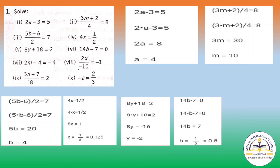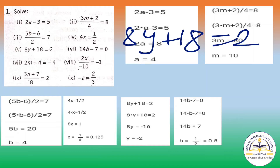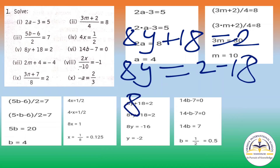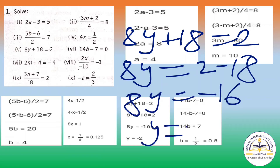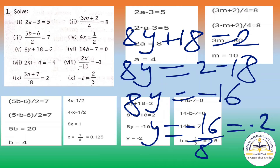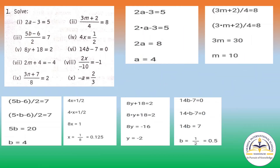Now we will solve question number 5: 8y plus 18 equals to 2. Here you have to first send 18 to the RHS, so 8y equals to 2 minus 18, you will get minus 16. Now y equals to minus 16 by 8, the answer will be minus 2. So y equals to minus 2.